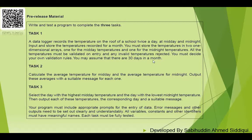Moving on to Task 2: calculate the average temperature for midday and the average temperature for midnight separately. That means you calculate the total for midday, the total for midnight, then compute the average for each one. You must output these averages with a suitable message for each.